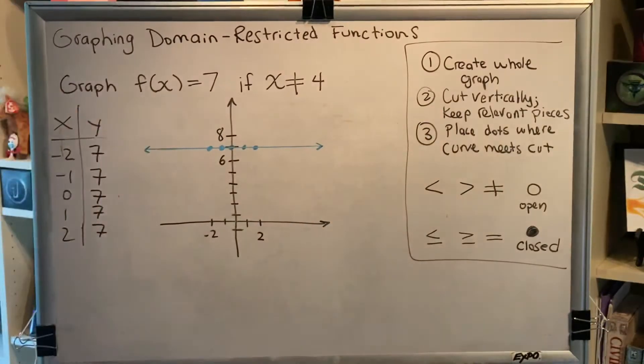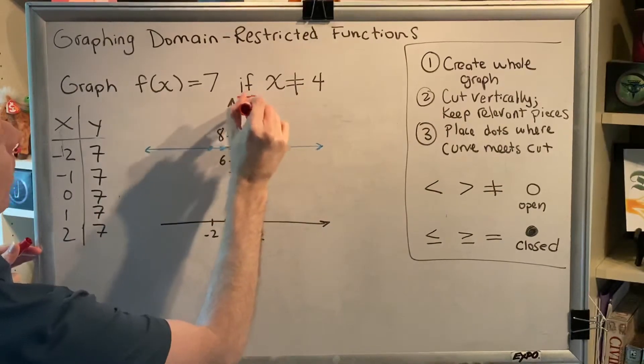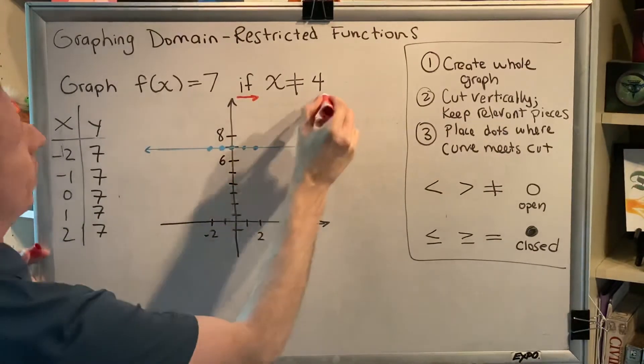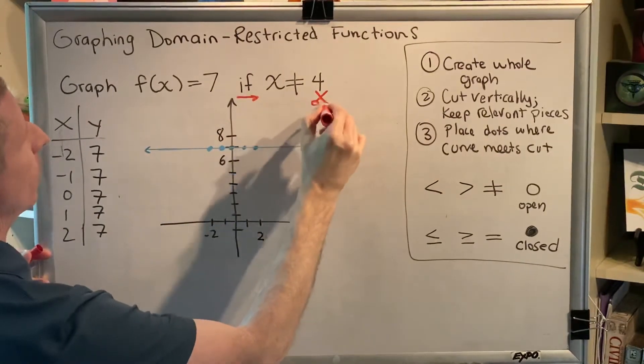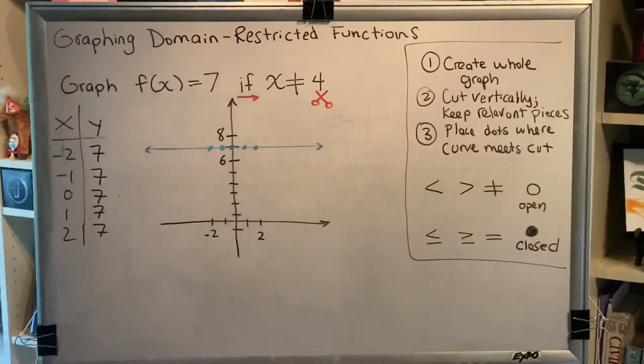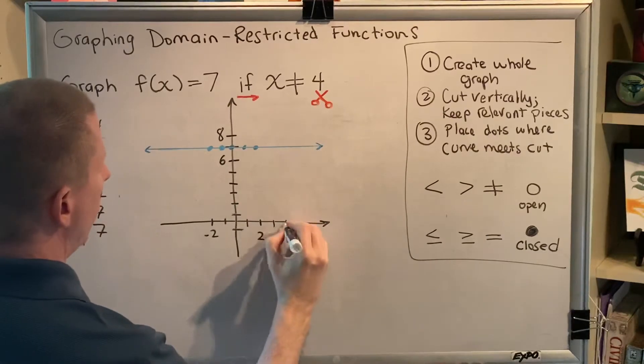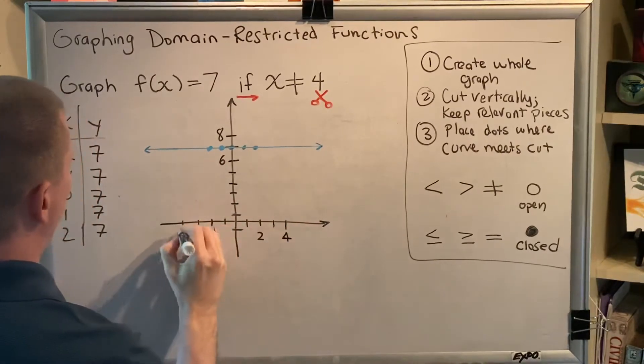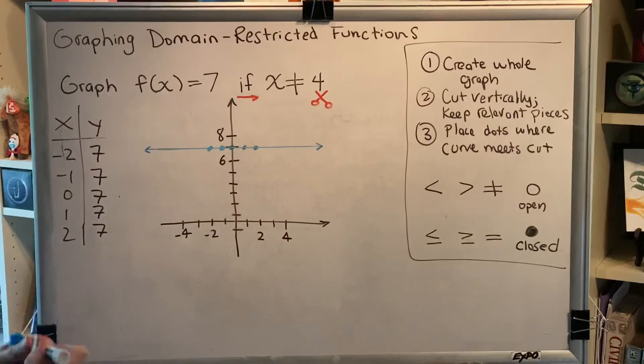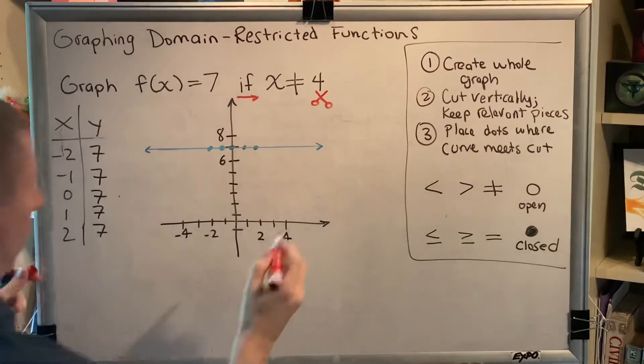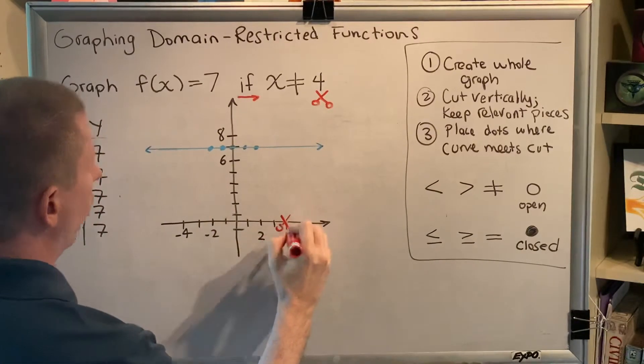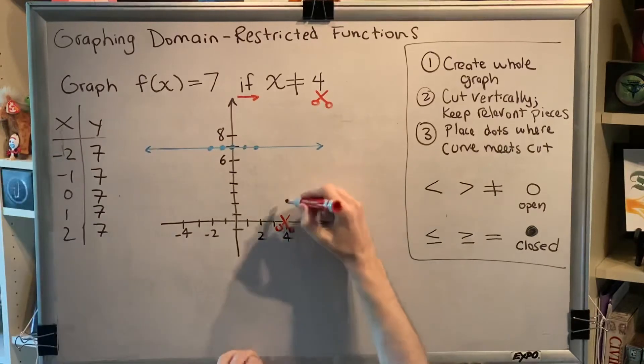Step 2. Cut vertically and keep the relevant pieces. So we look after the word if for any numbers. The only number we see is 4, and so we're going to cut vertically at 4. Which means I need to put a few more marks over here. So let's do 3 and 4, negative 3 and negative 4. So I'm going to cut vertically at 4. So here we go, a vertical cut.